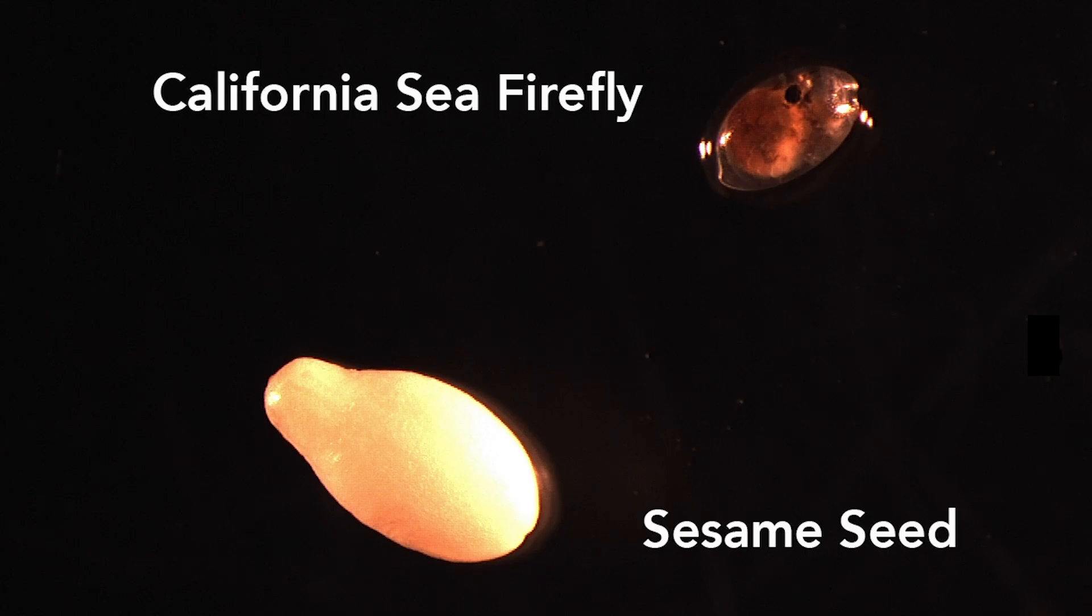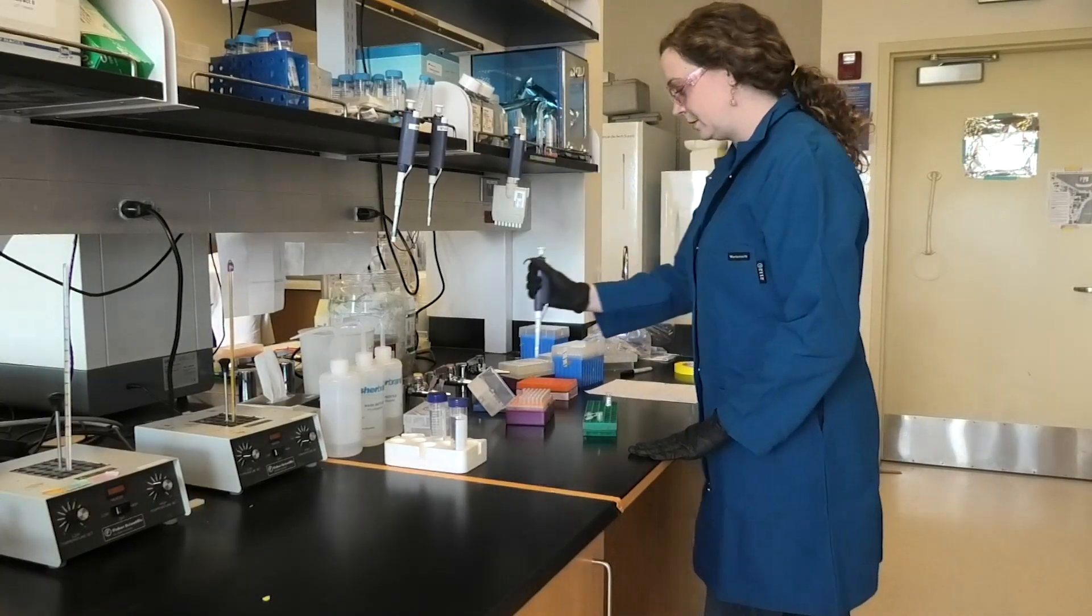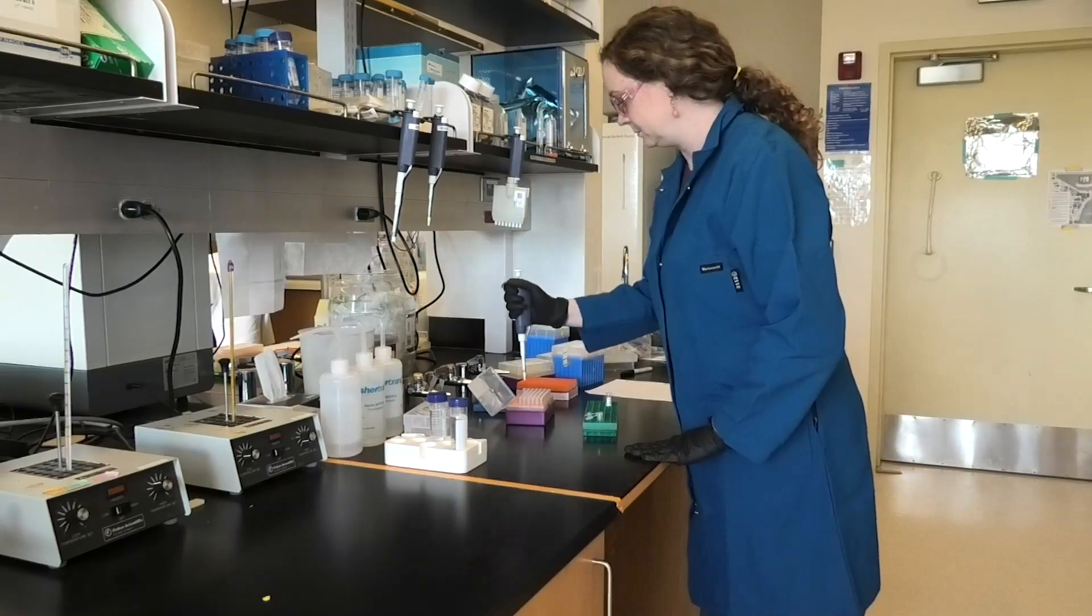But ostracods are little animals with big genomes. We can get about one and a half micrograms of DNA from a single animal, but the genome is three gigabases.